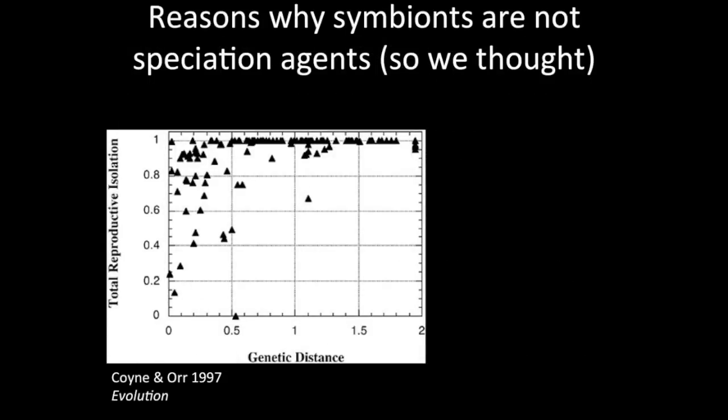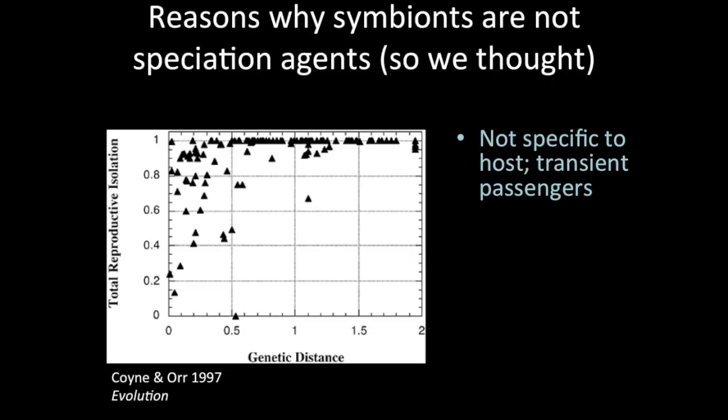Let's talk about the reasons why there's some resistance to this. Coyne and Orr in 1997 published a very famous study in Evolution, doing comparative studies in Drosophila, correlating genetic distance between Drosophila species relative to reproductive isolation on a scale of zero to one, where complete reproductive isolation equals good species. This sets up the framework that nuclear genetic distance correlates with reproductive isolation. Some attitudes around this time held that symbionts are not specific to hosts — they're often transient passengers. I'm going to talk about this issue, because there is accumulating evidence for species specificity in the microbial community, not just one particular symbiont.